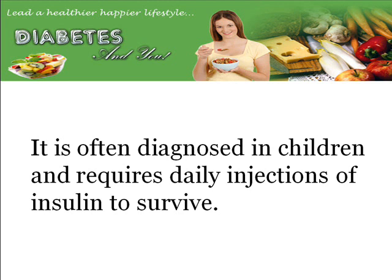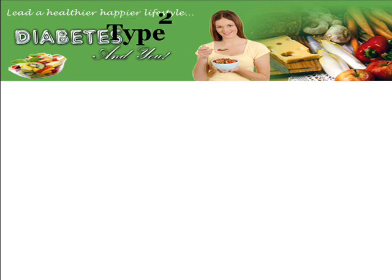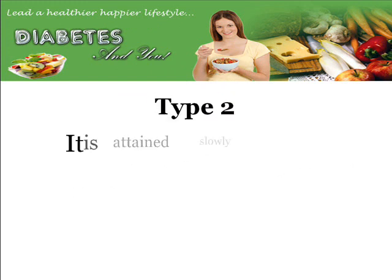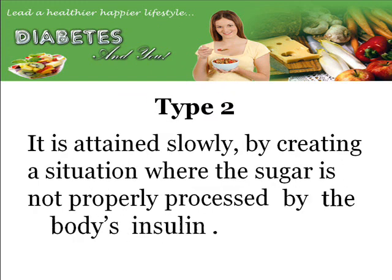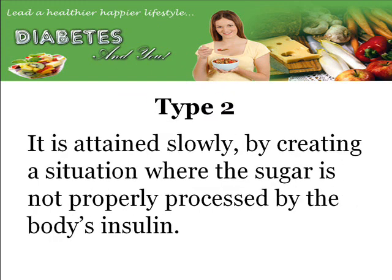Now let's discuss type 2 diabetes. Type 2 diabetes is attained slowly by creating a situation where the sugar is not properly processed by the body's insulin. Not enough insulin is produced to be able to handle the sugar, and so it leaves a lot of sugar in the bloodstream.